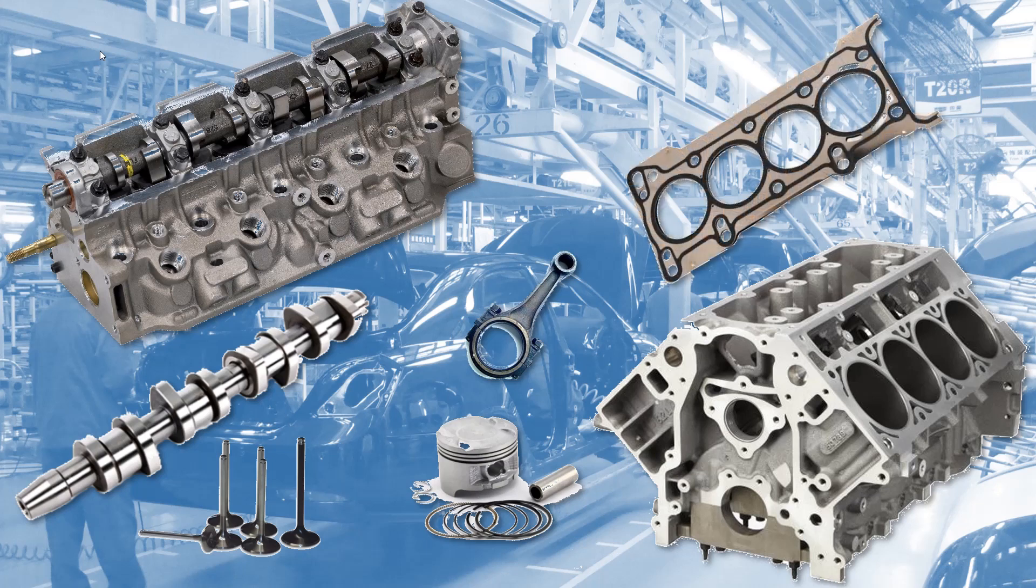The cylinder head gasket ensures sealing both by its form and its chemical composition, but also by its surface texture, and by the surface texture of the opposite sides which are in contact with the cylinder head and the engine block.